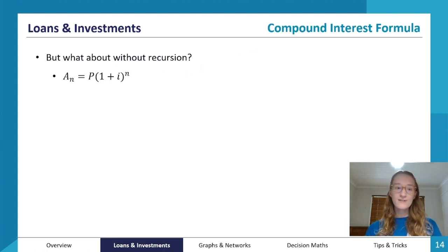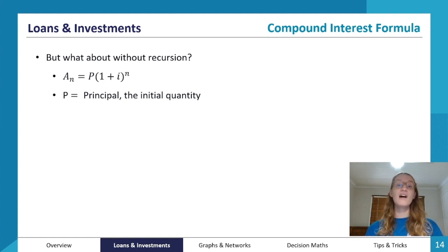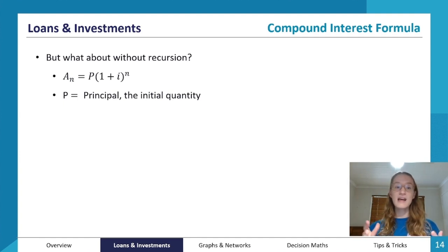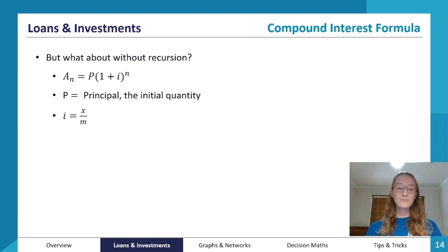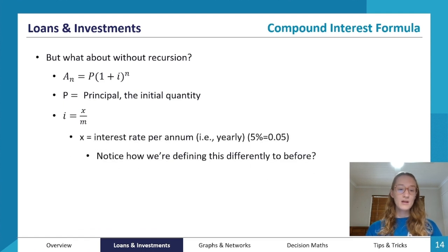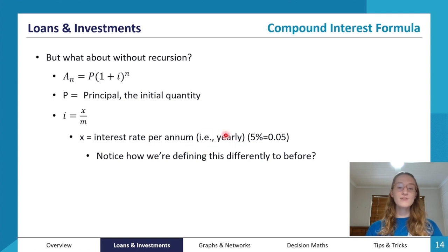So what do these variables mean? P is the principal — that's the initial quantity. So if we had $20,000 in a bank account, that would be the principal — our starting point. Then i is x divided by m, where x is the interest rate per annum (yearly), and m is the number of compounds per year.